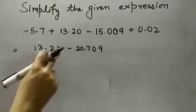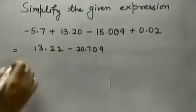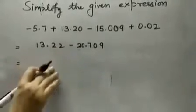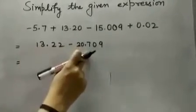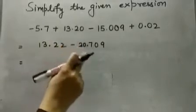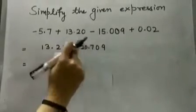Now, we are left with a positive number and a negative number which we have already discussed. Subtract the smaller number from the bigger number and place the sign of the bigger number.